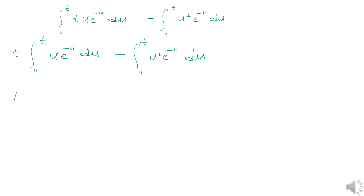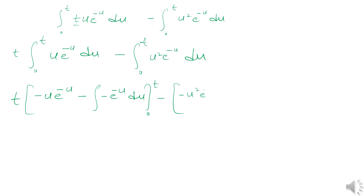The integral of u e to the power negative u is evaluated from 0 to t. For the second integral, u-squared e to the power negative u, we apply integration by parts: u-squared e to the power negative u minus 2u e to the power negative u, with limits from 0 to t.